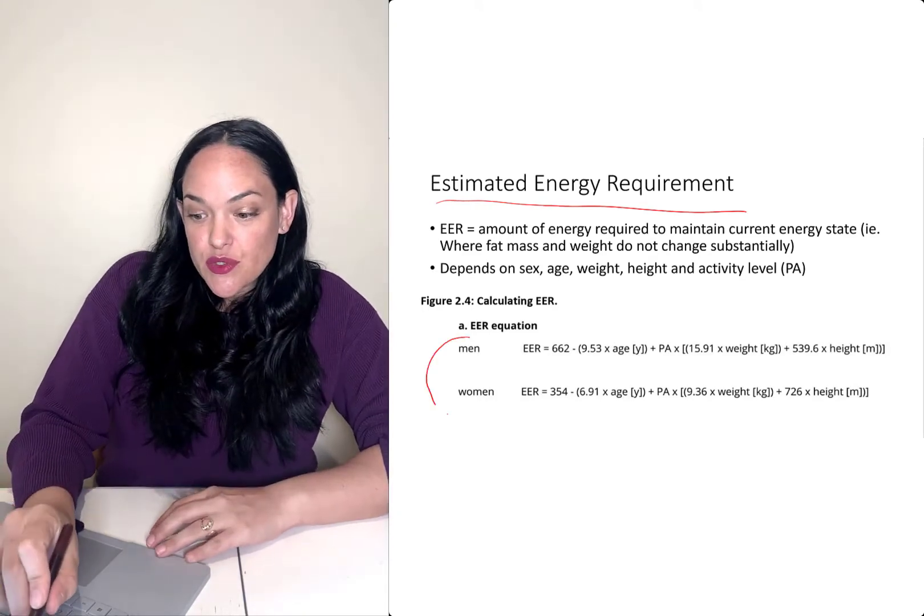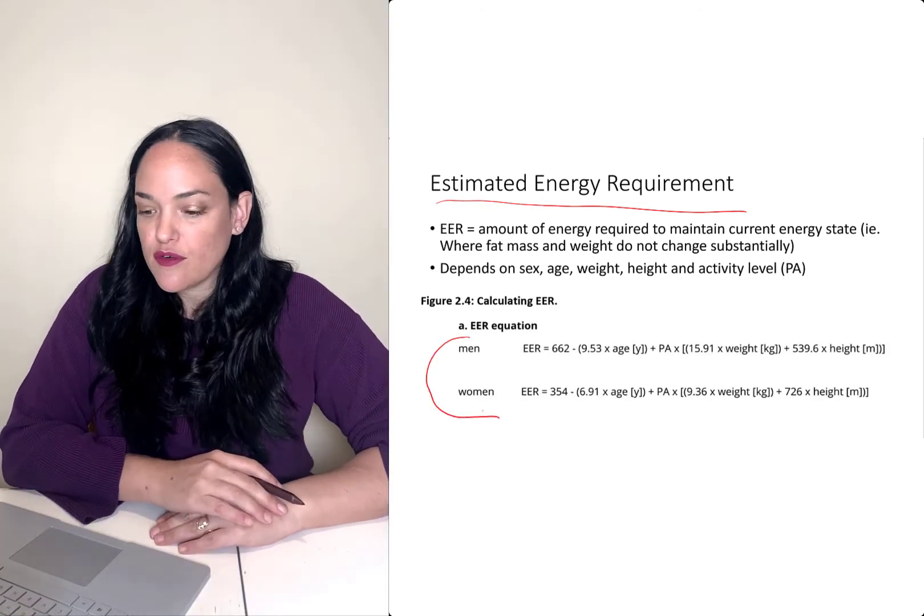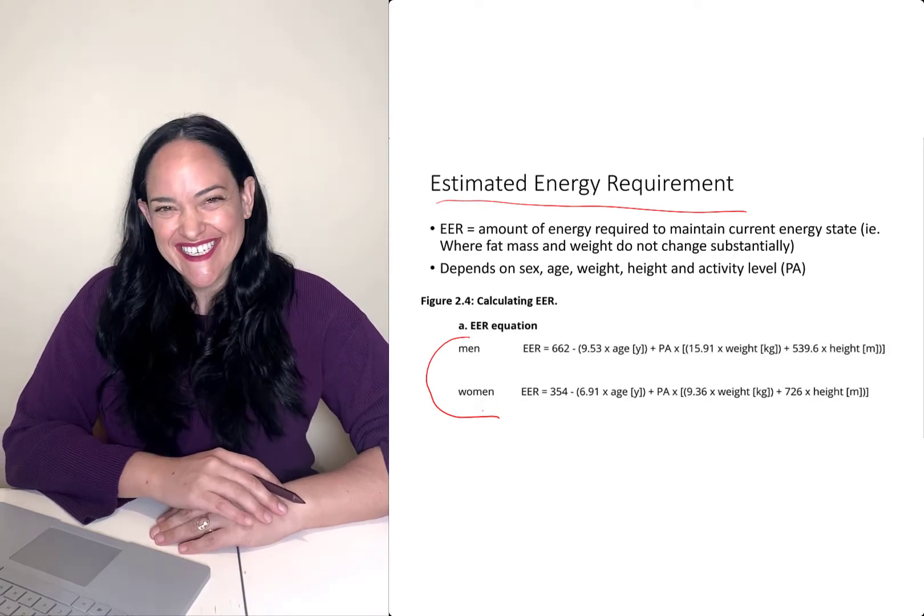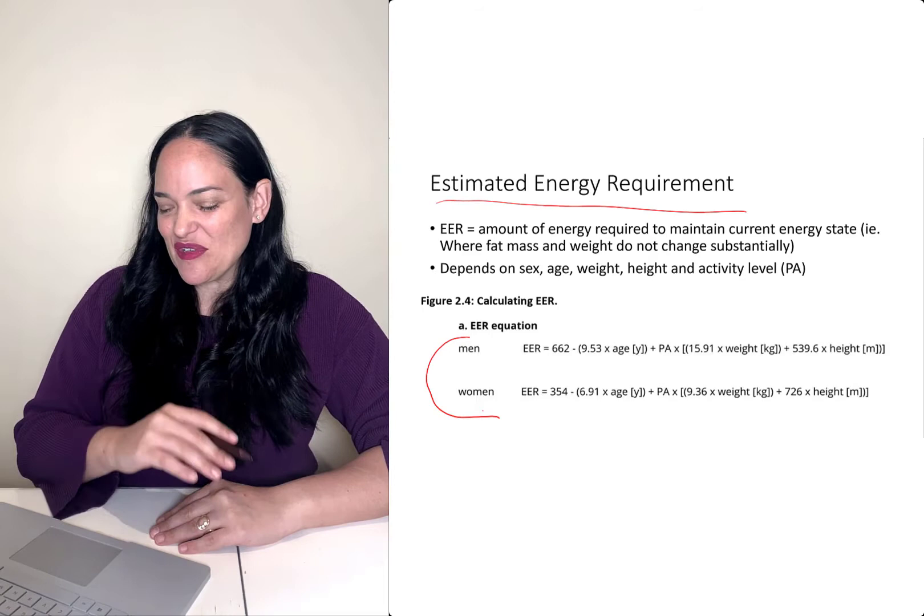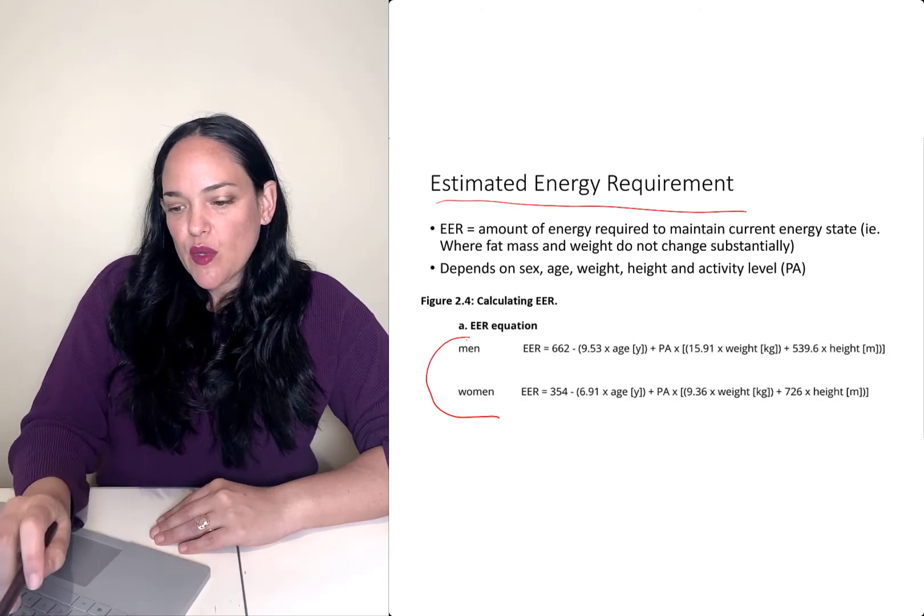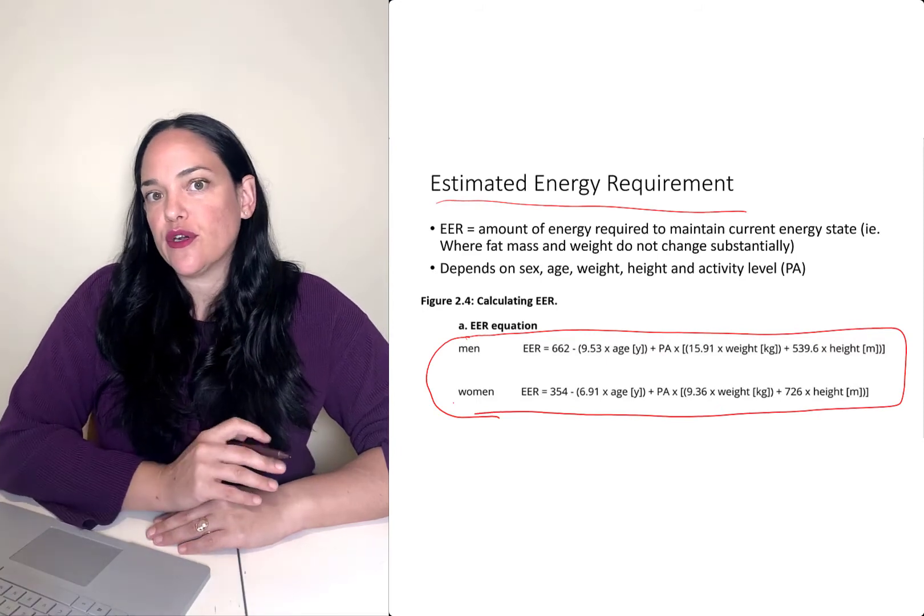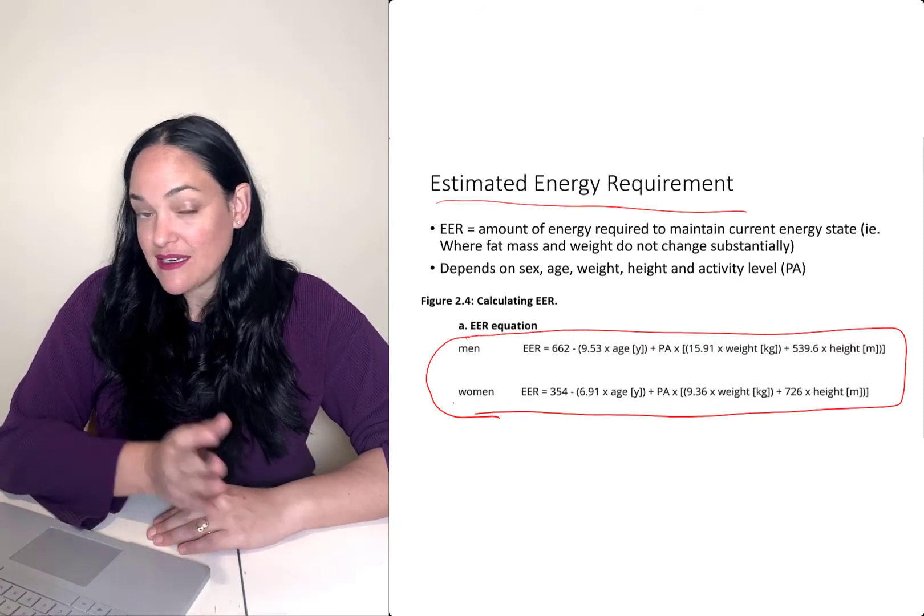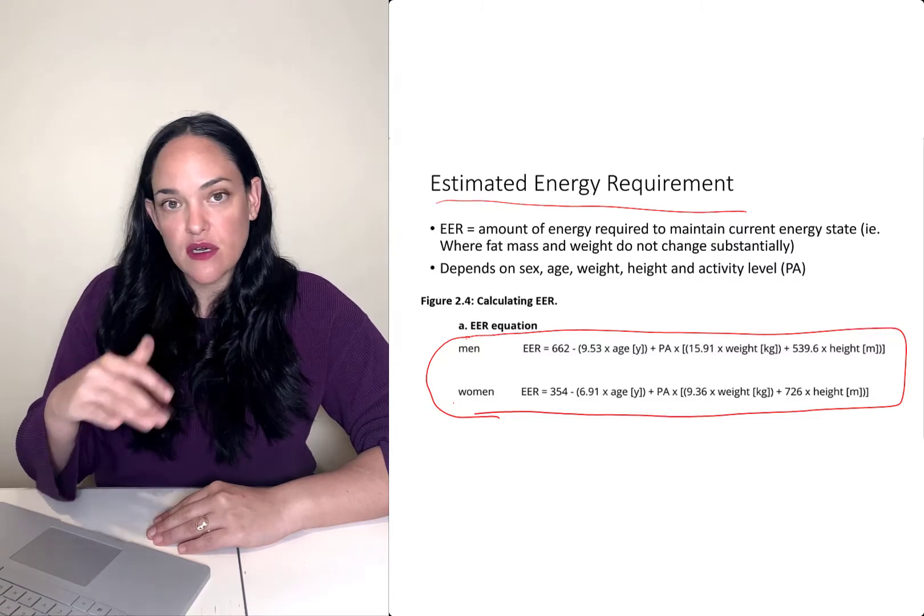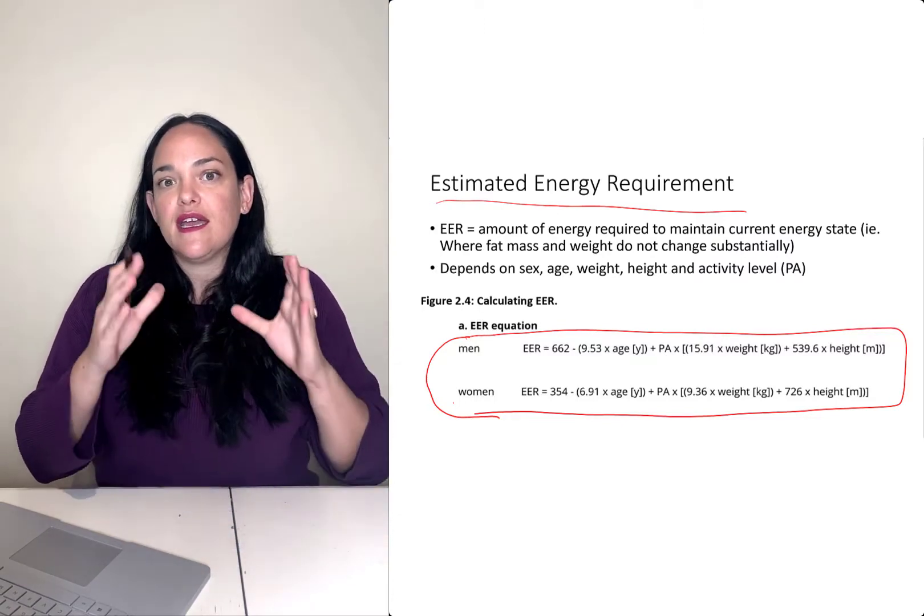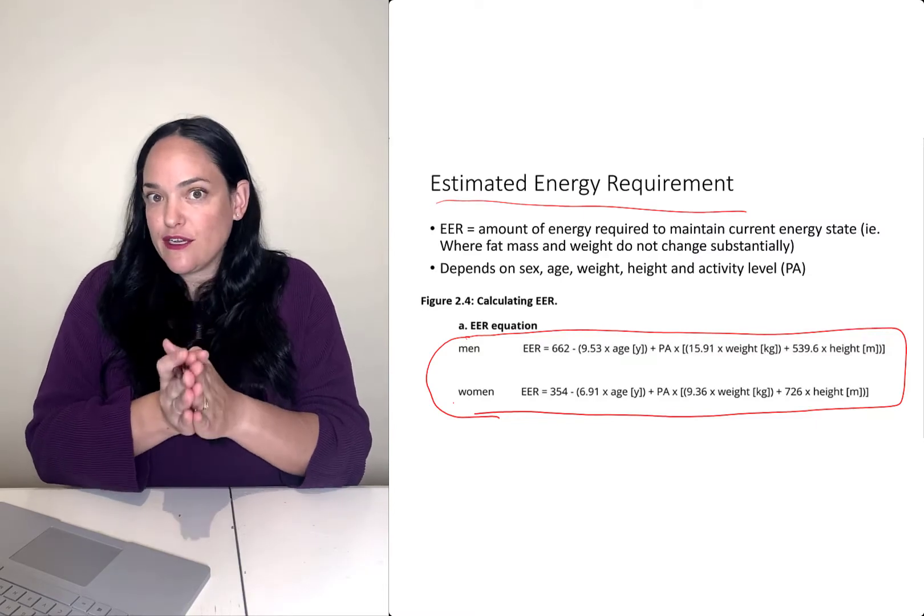So we use these two calculations. There's one for men and one for women. Unfortunately for me, men get to eat a little bit more than women do. But we can use our own data and plug them into this equation in order to estimate, given all those factors, given your weight, given your height, given your age, etc., how much energy should you be getting in order to stay basically at your same size?